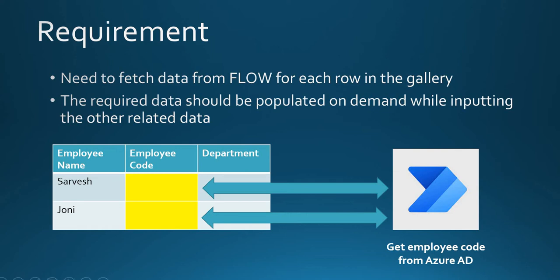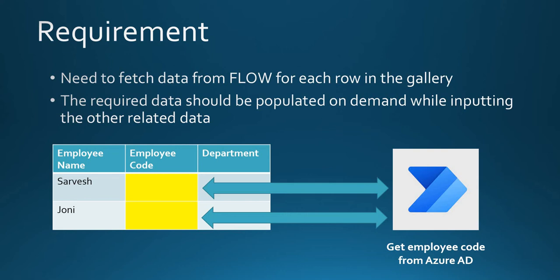Here you can see I have a gallery for employees. When I add the employee name, I need to get the employee code from the flow. The reason is I can't directly get the employee code from the Office 365 connector or even the Azure AD connector — I need to make a call to the flow and then the flow will get the details from Azure AD. Whenever I add a row in the gallery, I need to call a flow and get the data populated in the field next to the employee name.